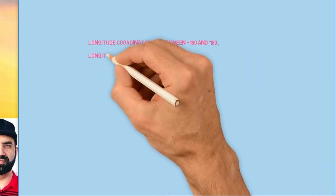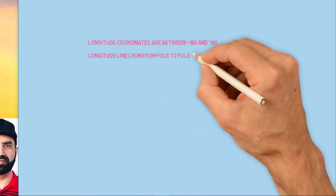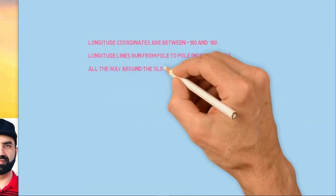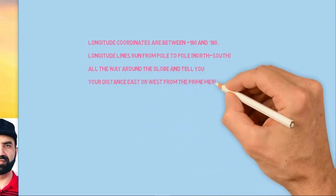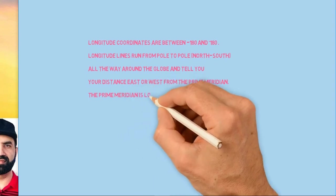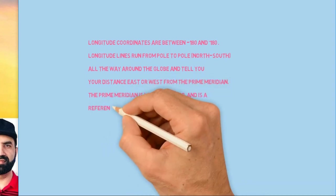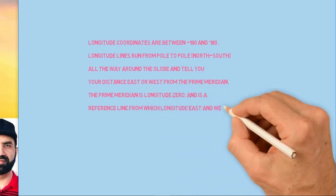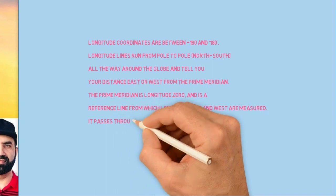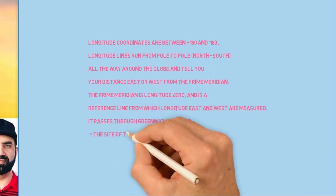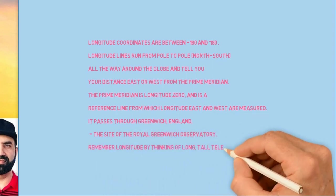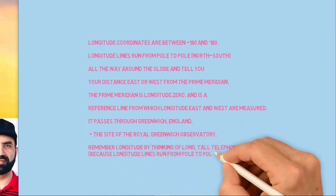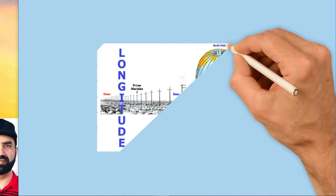Longitude coordinates are between minus 180 and plus 180 degrees. Longitude lines run from pole to pole—north to south—all the way around the globe and tell you your distance east or west from the prime meridian. The prime meridian, longitude zero, is a reference line from which longitude east and west are measured. It passes through Greenwich. Here is an example of longitude with the poles.